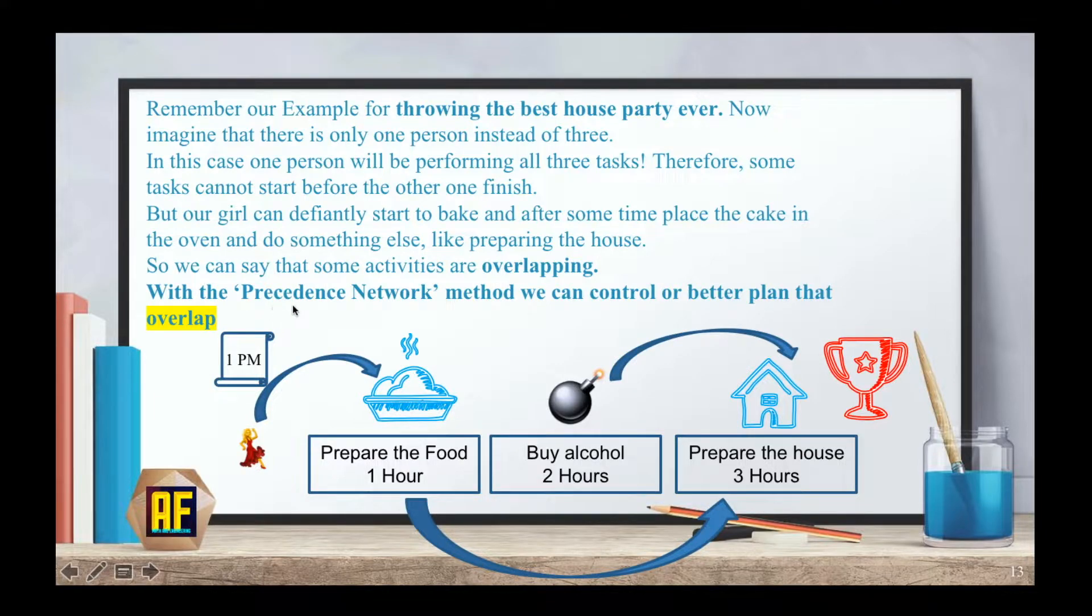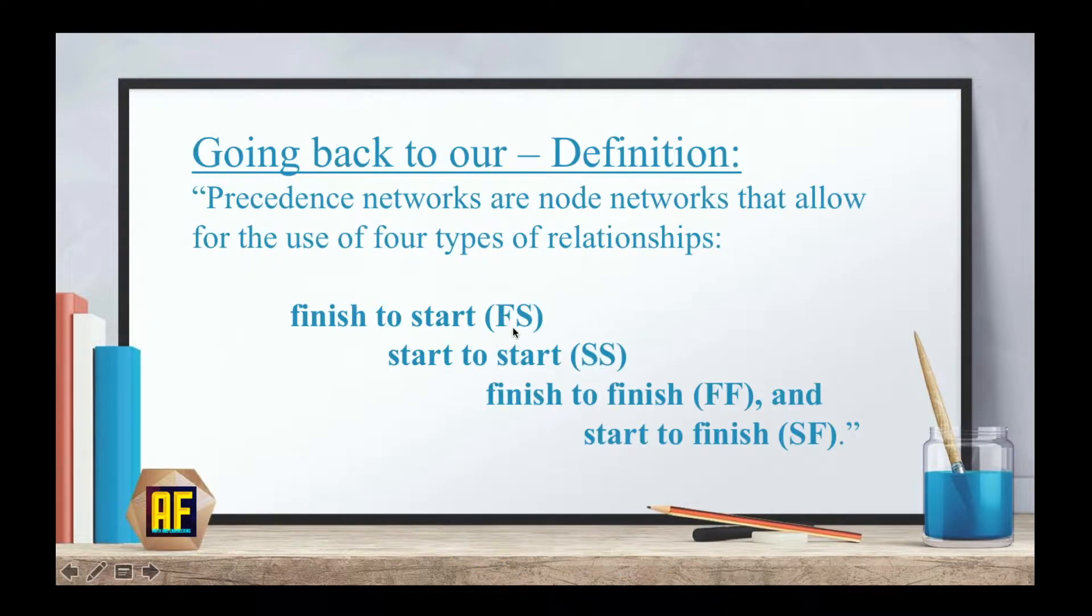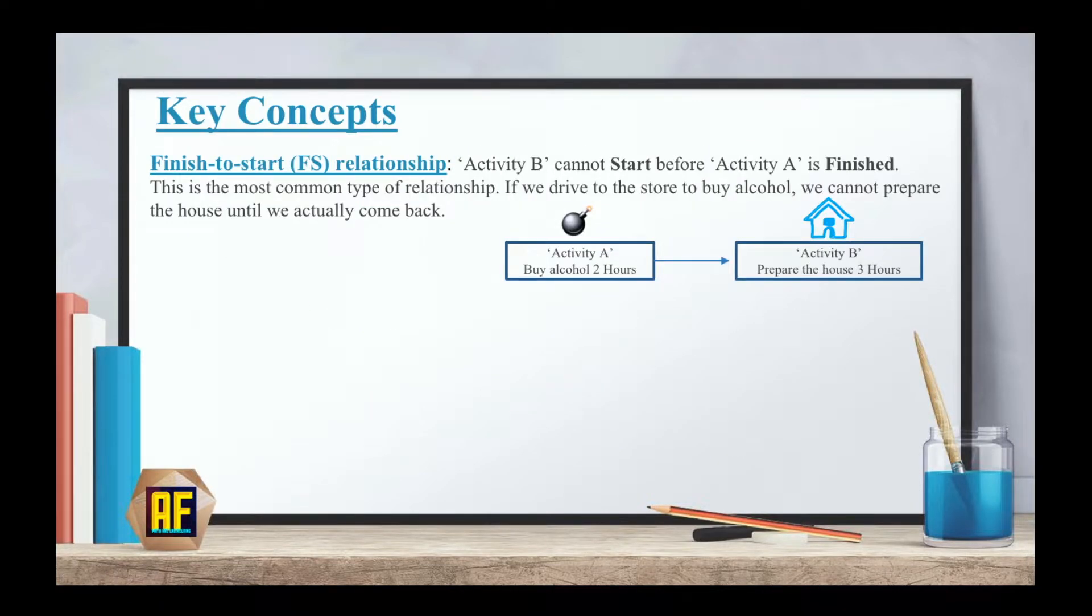With the precedence network method, we can control or better plan that overlap. This is what this method is all about, and this is why this method is actually practical and something that you can use in the field. By using these relationships, we can better manage that overlapping. So let's start by going over the definitions and giving examples.